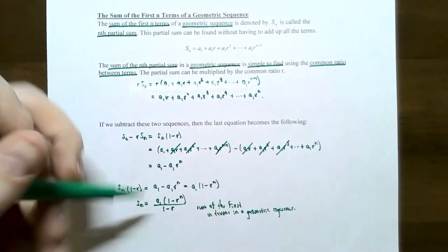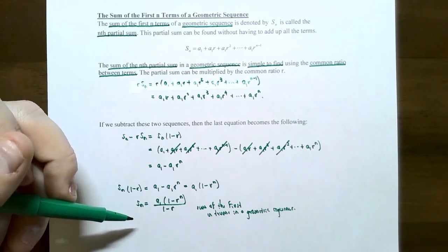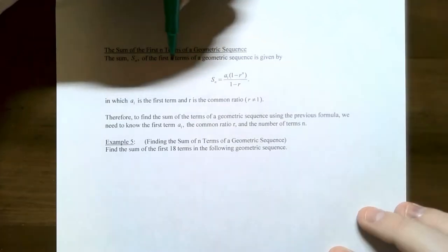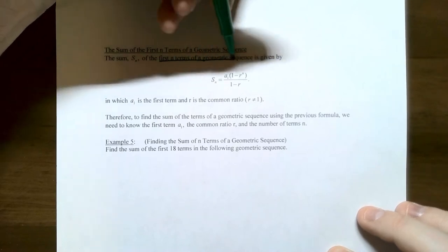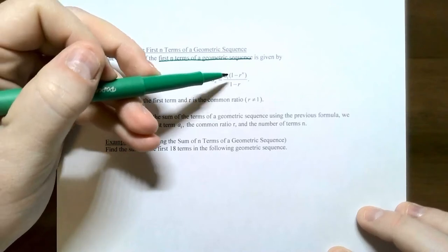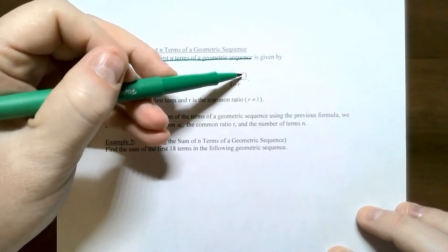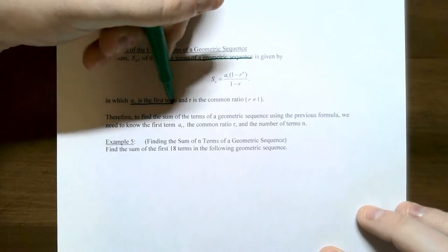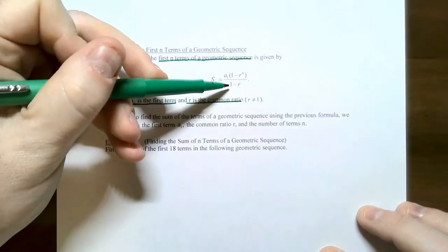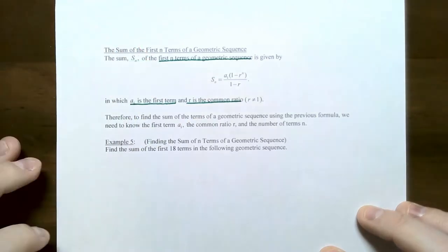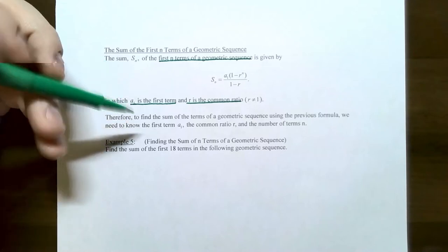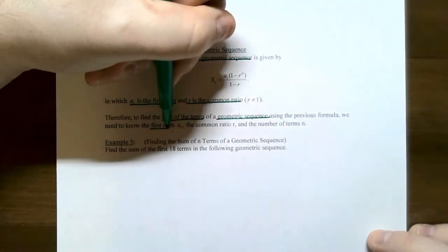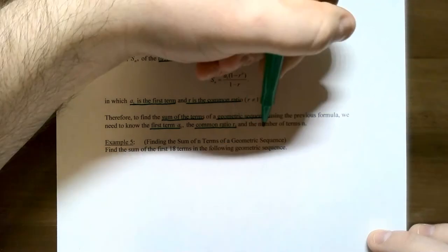The formula is capital S of n equals a sub 1 times (1 minus r to the nth power) divided by (1 minus r). You need to know the first term a sub 1 and the common ratio r. Notice that the common ratio cannot be 1, otherwise you'd be dividing by zero. To find the sum, you need the first term, the common ratio, and how many terms you're adding.